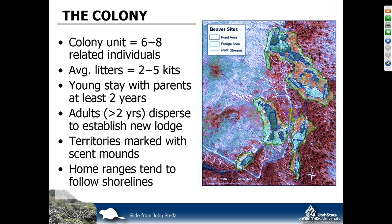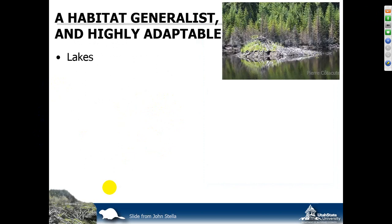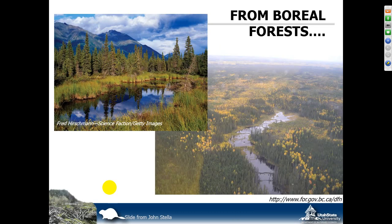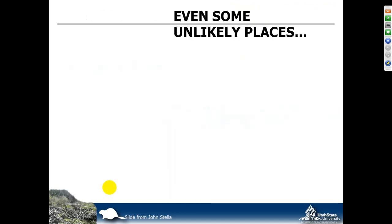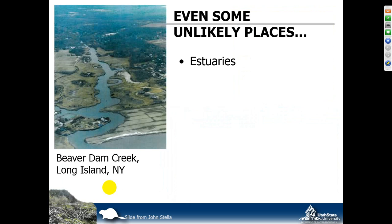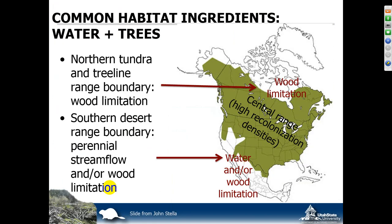Beaver are organized around a colony — a family unit — that tends to consist of somewhere between four and eight individuals. Every year a mating pair tends to have two to five kits. Those kits stay around for a couple years, which is quite long for mammals, and then disperse and try to make a living on their own. They are a habitat generalist that is highly adaptable. We find them in lakes, rivers and streams, abandoned channels and floodplains, wetlands, arboreal forests up north, and dry deserts down south. This rodent can even occupy estuaries.